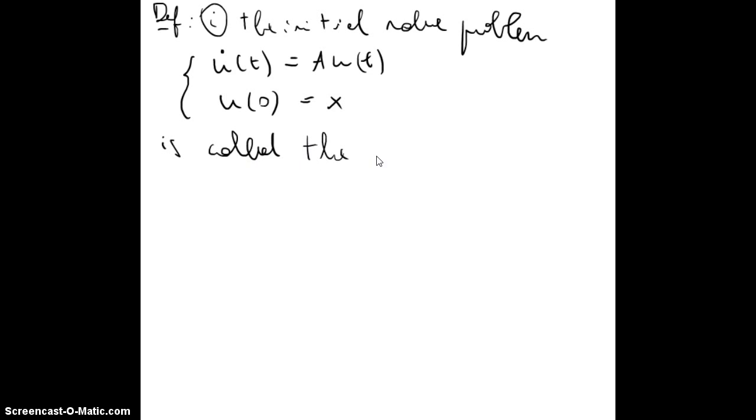Let's go back to where we started. Definition: the initial value problem u'(t) = A u(t), u(0) = x. This is called the abstract Cauchy problem associated to A and also associated to the initial value x.